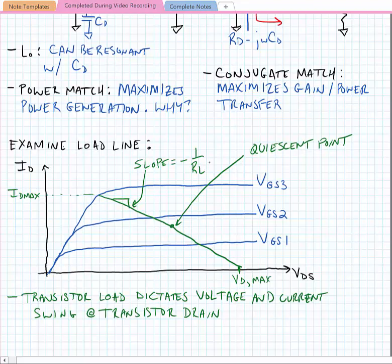If we pick a load line that causes the transistor to swing from the maximum current to the maximum voltage, this load line would be the optimum load resistance, or R_opt.